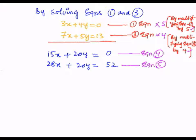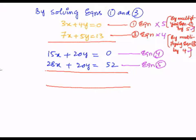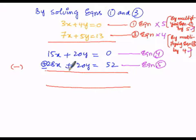By simplifying these two equations, since both 20y terms are of positive signs, in order to simplify we have to subtract. We change the signs of each and every term of equation 5 from positive to negative and negative to positive. So the actual sign of 28x is positive, now it becomes negative. The actual sign of 52 is positive, then it becomes negative.